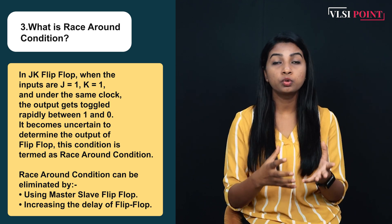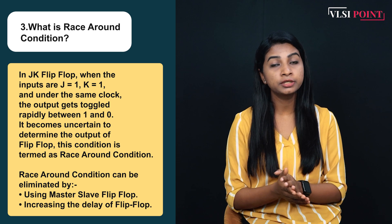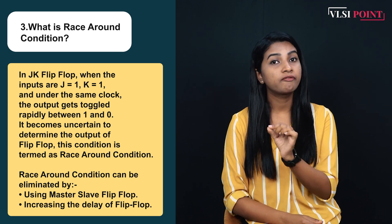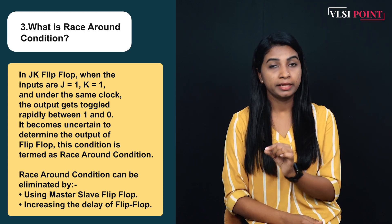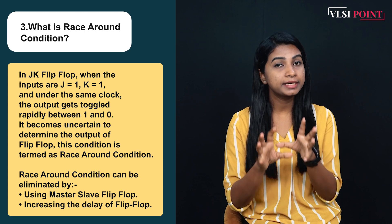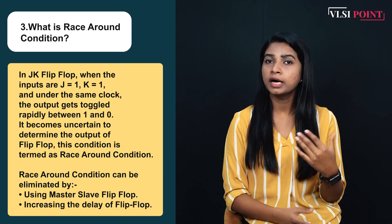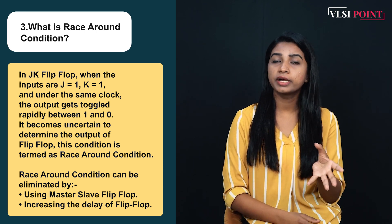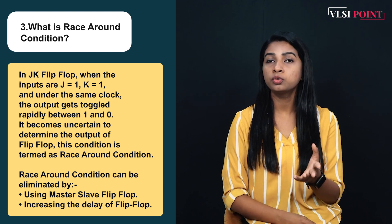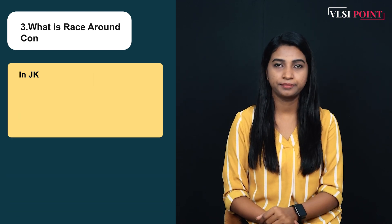So this is called the race around condition. What you can do to eliminate this race around condition? You should use master-slave flip flops — in master-slave flip flops this race around condition will not occur. Another way is you can increase the delay of the flip flops in order to eliminate the race around condition.